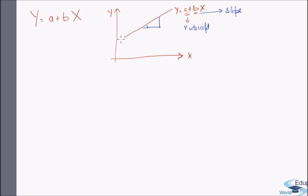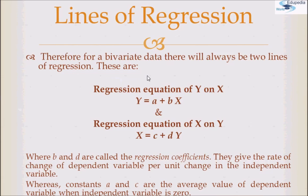a is the value of y when x equals 0. In the same way, in these regression equations, a and b are constants for the first equation, and c and d are constants for the second equation. All of b and d are called the regression coefficients — they are the slope, giving the rate of change of the dependent variable per unit change in the independent variable.